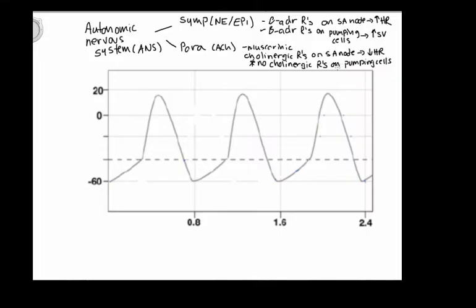Let's first look at how the sympathetic nervous system affects heart rate. Here is an action potential of an autorhythmic cell — you know it's an autorhythmic cell and not a pumping cell because it has no depolarization plateau. We have millivolts on the y-axis and time in seconds on the x-axis. We have our graded depolarization or pacemaker potential, which is due to those funny sodium channels that start to leak due to after-hyperpolarization. As we get closer to threshold, we start opening some calcium channels.